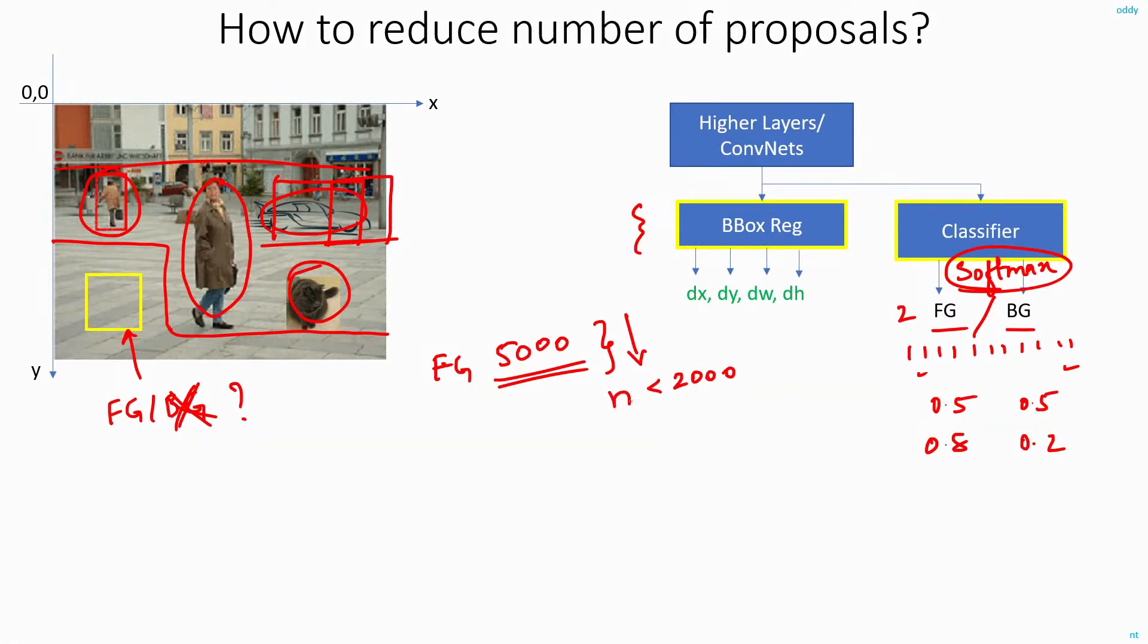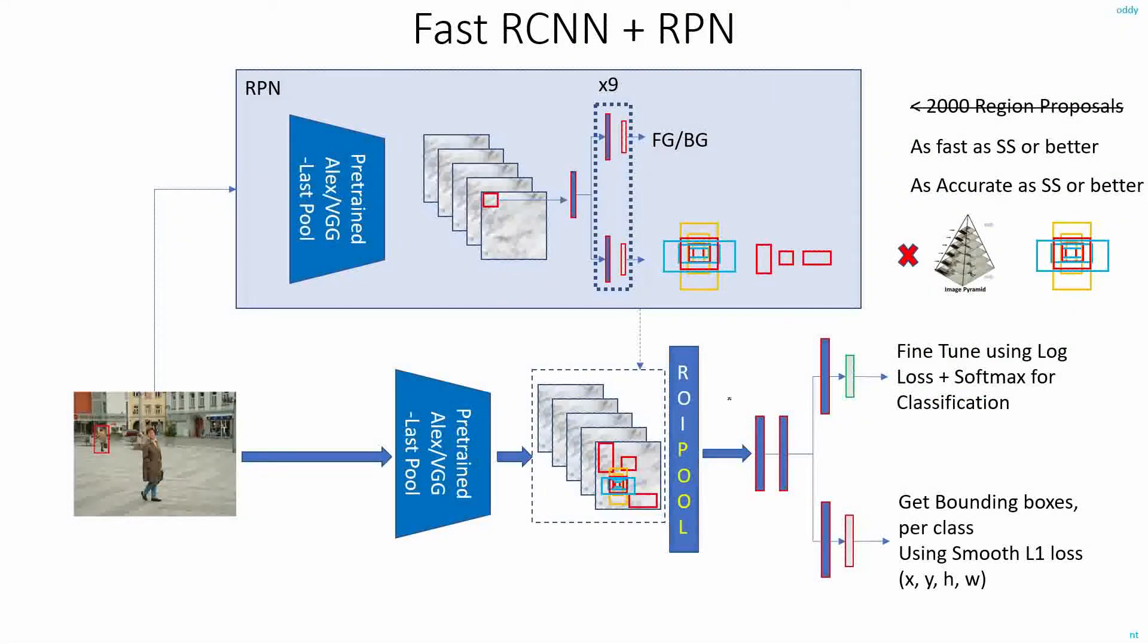I can keep varying, maybe I can try with 1,000 proposals and see what is the level of accuracy. If there is no significant drop in the accuracy, then I can as well choose very few proposals so that the amount of processing I will do in this part of the network will be less.